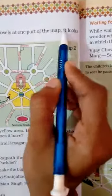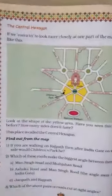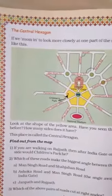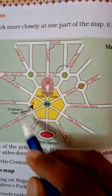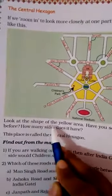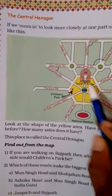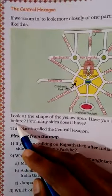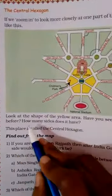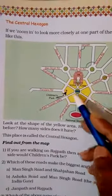The Central Hexagon. If we zoom in to look more closely at one part of the map, it looks like this. Look at the shape of the yellow area — here is the shape of the yellow area. How many shapes does it have? Have you seen this shape before? This shape has how many sides?